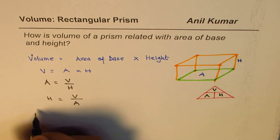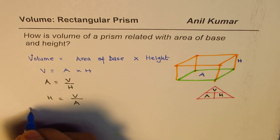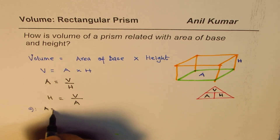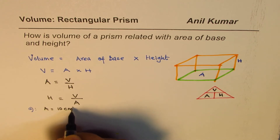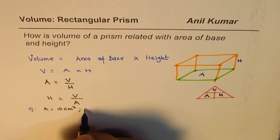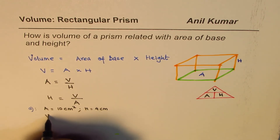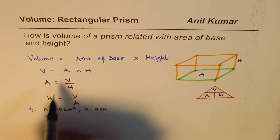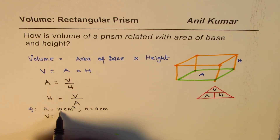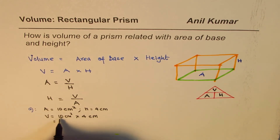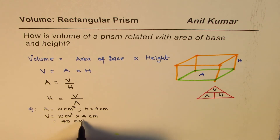Let's do Example A. We are given area as 10 cm² and height as 4 cm. What is the volume? Volume equals area times height, so 10 cm² times 4 cm equals 40 cm³.